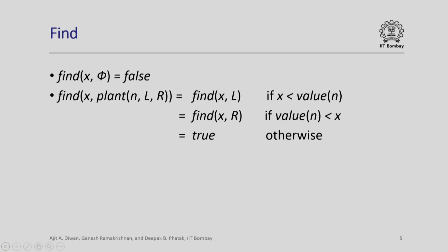If value(n) is less than x, then we try to find x in the right subtree. Otherwise, x is neither less than value(n) nor is value(n) less than x, which means x equals value(n), and therefore we return true.